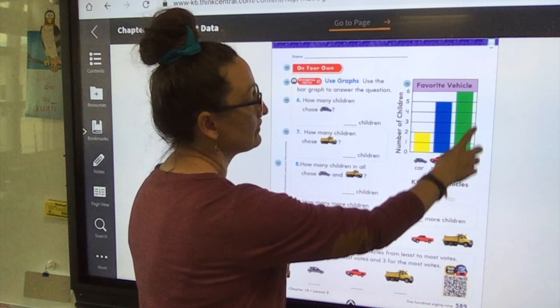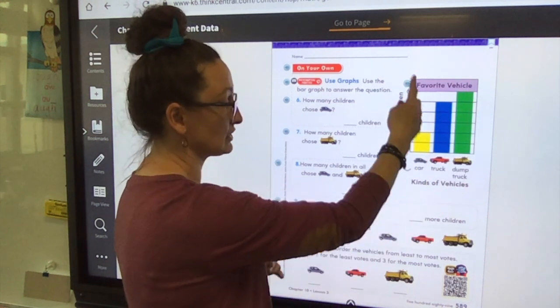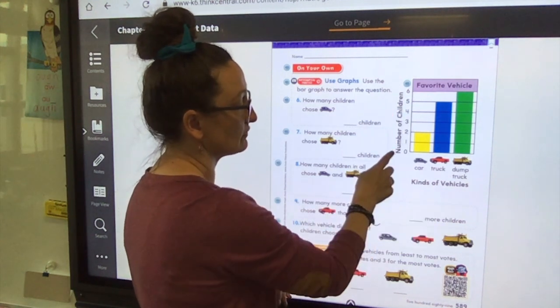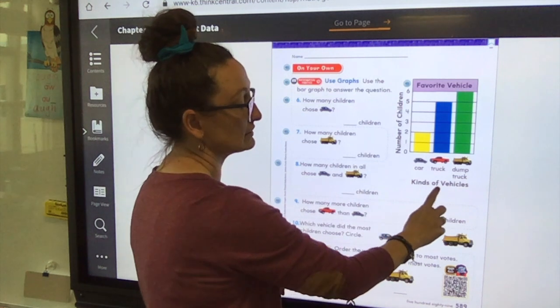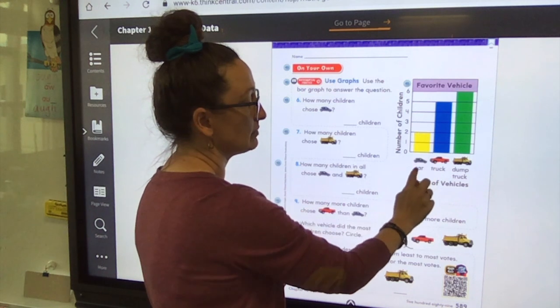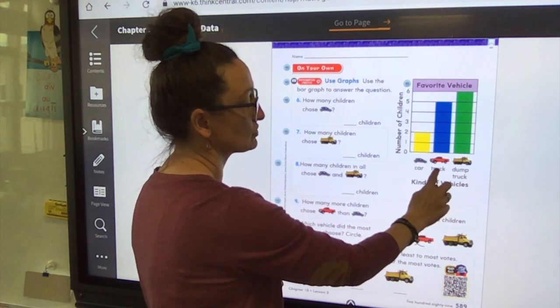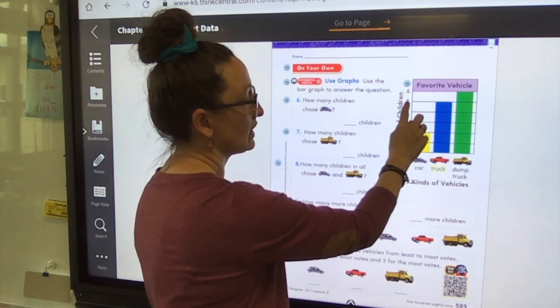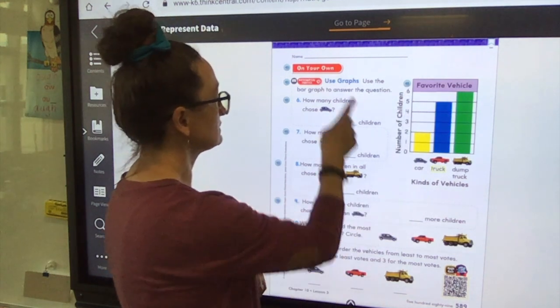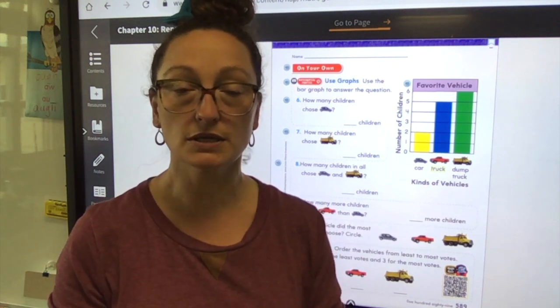Look at your graph over here. It's going in a different direction. Notice our bars are going a different direction, they're going up and down. But still look for your bold words. So we have Number of Children, Kinds of Vehicles, and we have car, truck, dump truck. Follow it up. How many cars? Two. How many trucks? Five. And dump truck? Six.